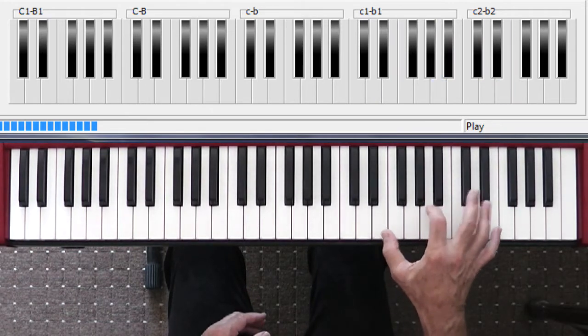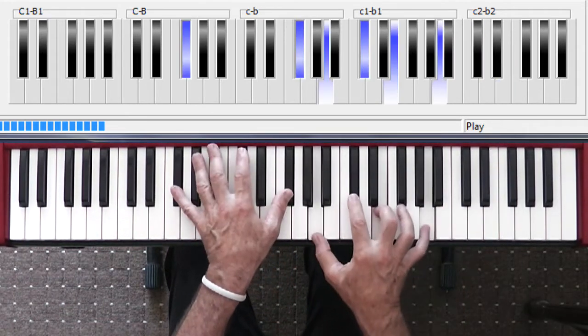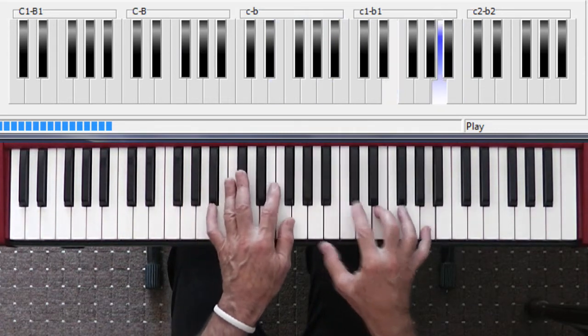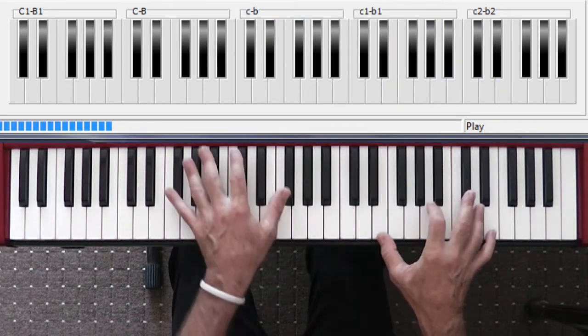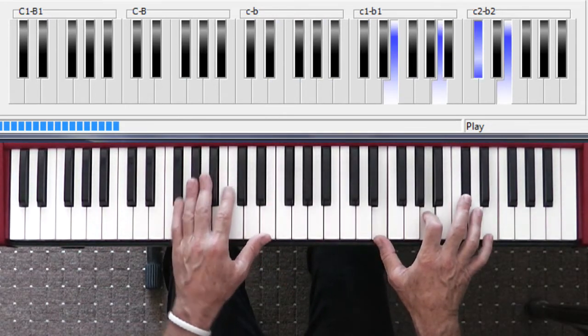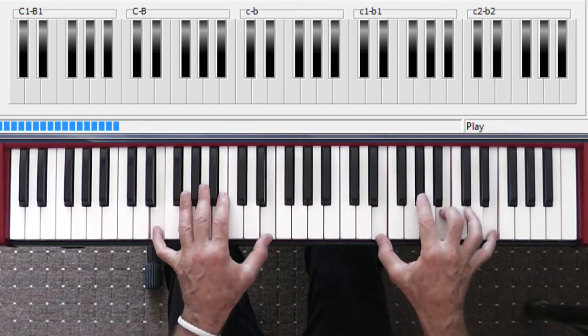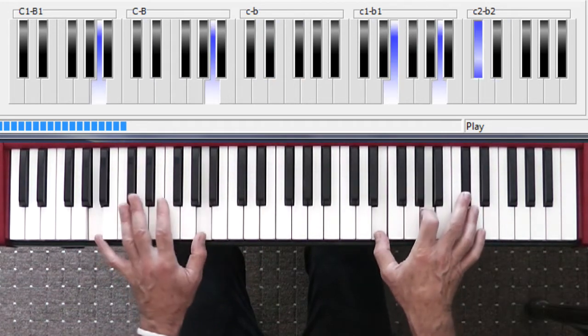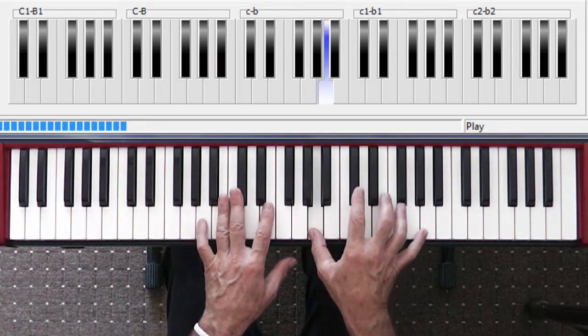Because this gets you around the A's and the F sharp minors, puts you in good proximity for the E's and the D's, back to A's. So does the root inversion.